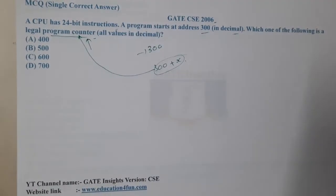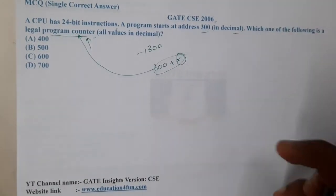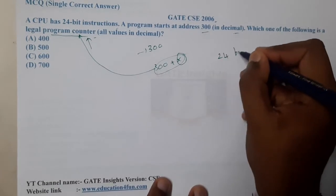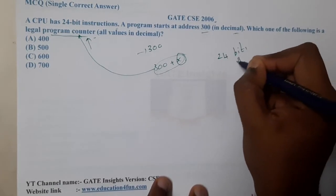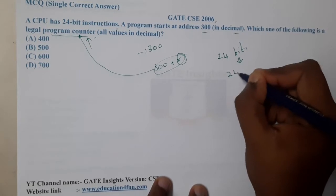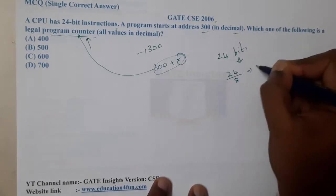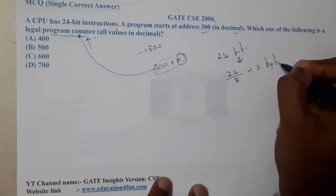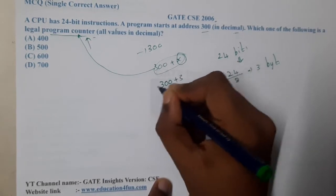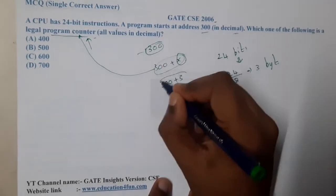What is the address size here? It is nothing but 24 bits. If I convert it into bytes, that is 24 by 8, that is 3 bytes. So basically we are saying it is plus 3. If 300 is executing, 303 will be there in the program counter.